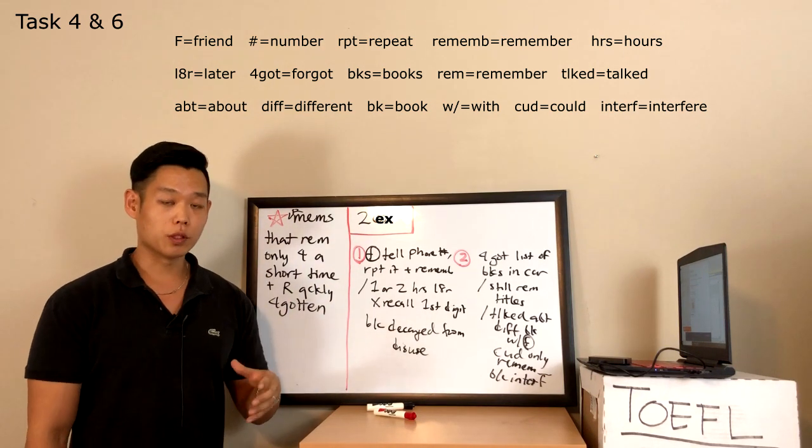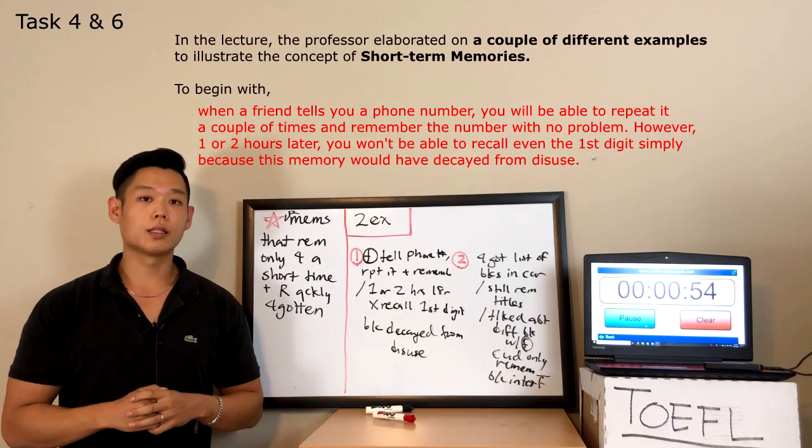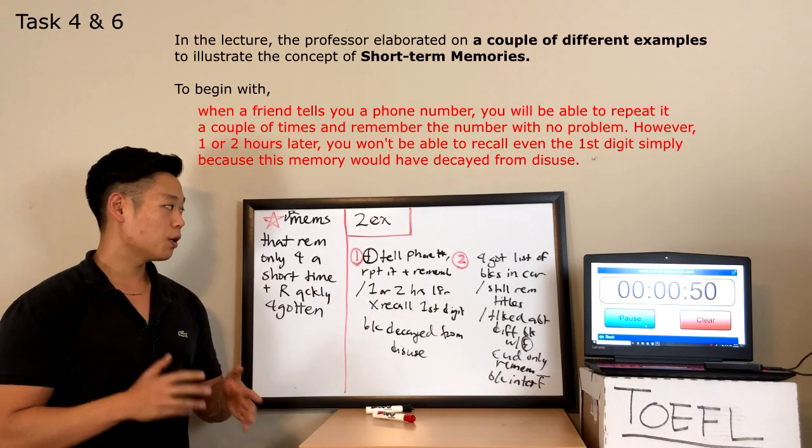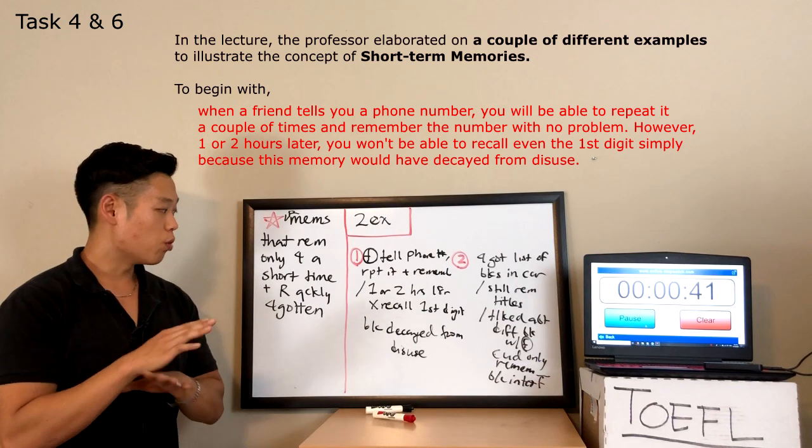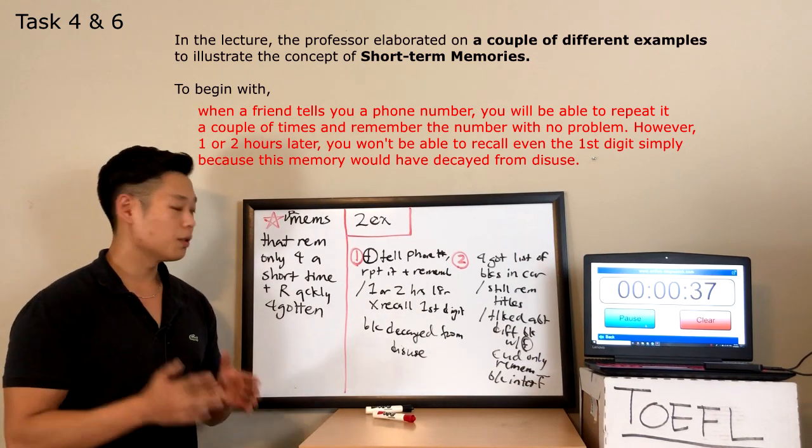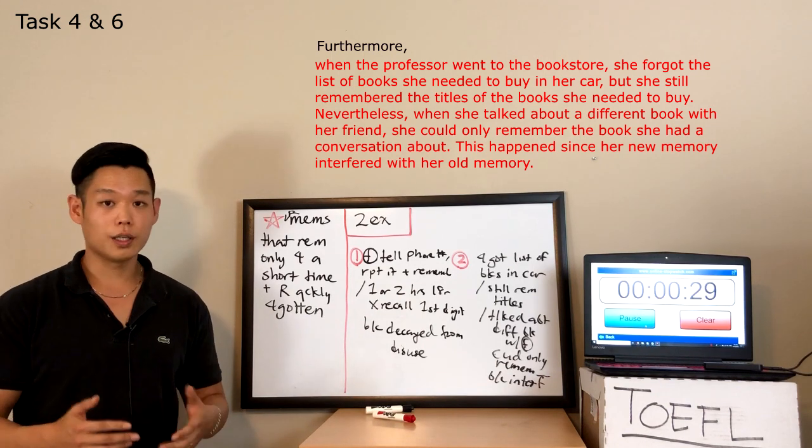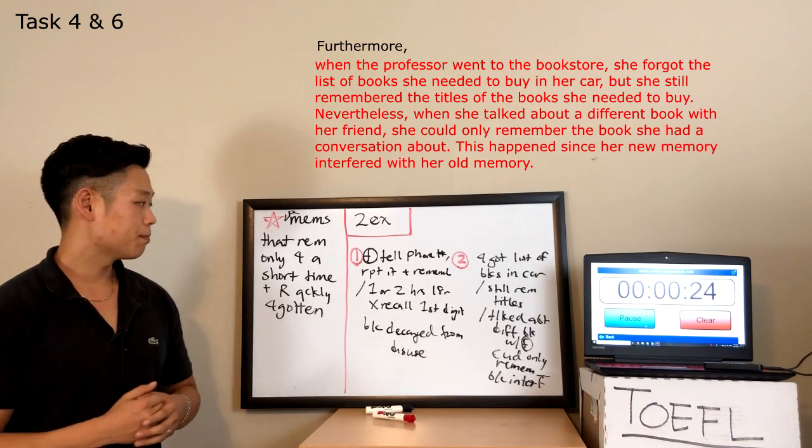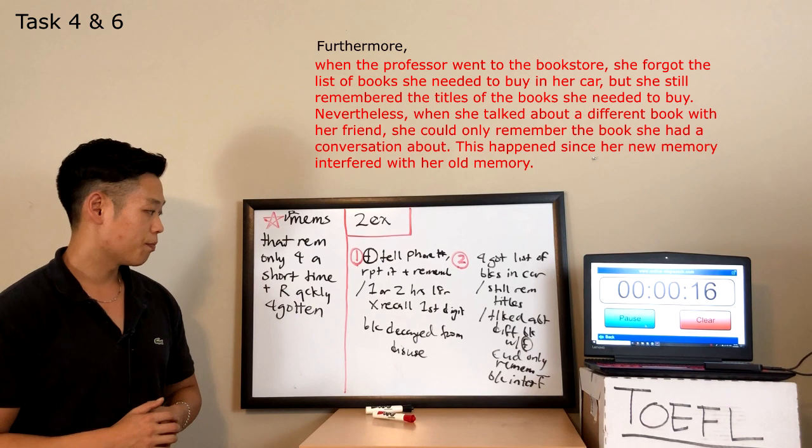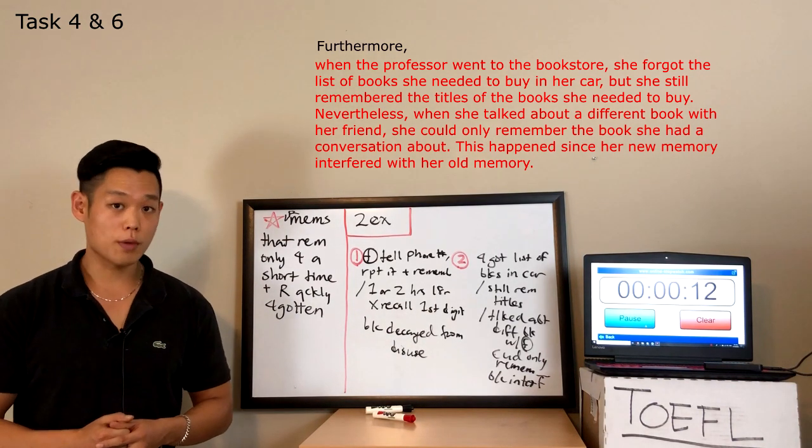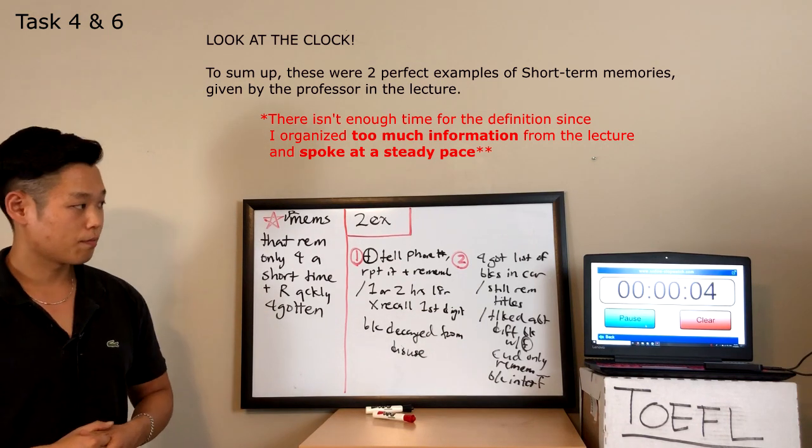All right. Now that we know what I'm going to say for my sample response, let's listen to my sample response. In the lecture, the professor elaborated on a couple of different examples to explain the concept of short-term memories. To begin with, when a friend tells you a phone number, you will be able to repeat it a couple of times and remember the number with no problem. However, one or two hours later, you won't be able to recall even the first digit, simply because this memory would have decayed from this use. Furthermore, when the professor went to the bookstore, she forgot the list of books in her car, but she still remembered the titles of the books that she needed to buy. Nevertheless, when she talked about a different book with her friend, she could only remember the book that she had a conversation about. This happened since her new memory interfered with her old memory. To sum up, these were two perfect examples of short-term memories given by the professor in the lecture. Thank you for your time and consideration.